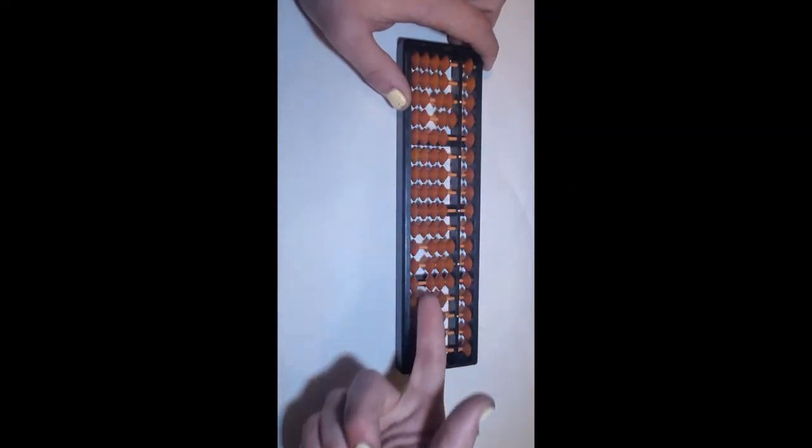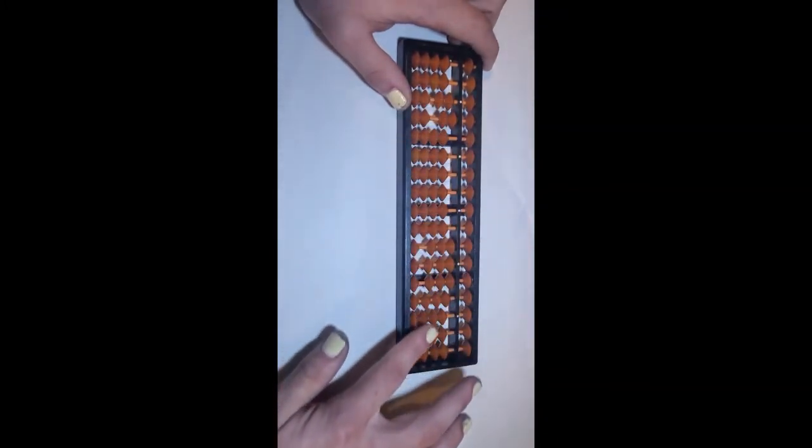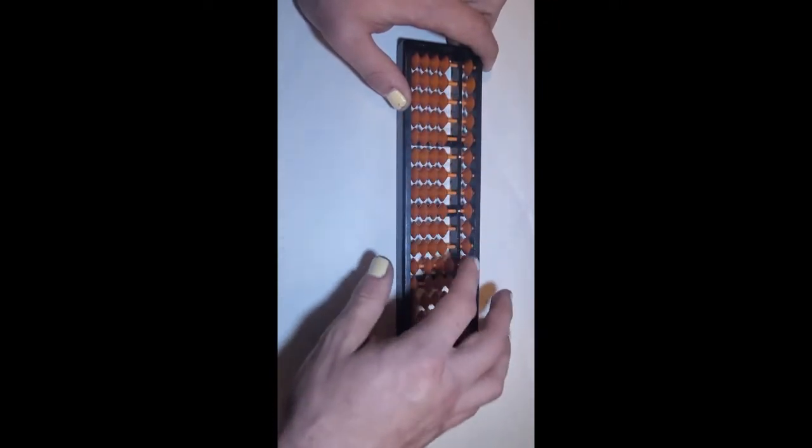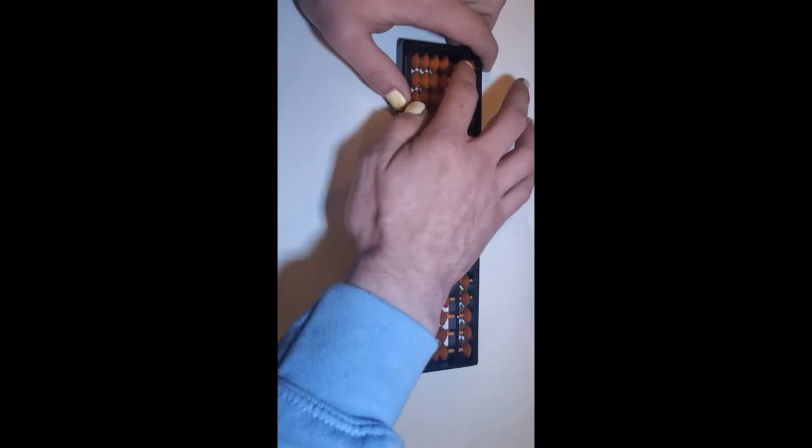Down here, this is called Earth, this bottom section. And up here, this is called Heaven. On Earth, we have the Earth counters, and in Heaven, we have the Heaven counters.